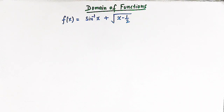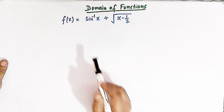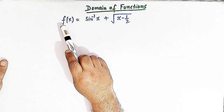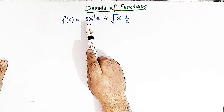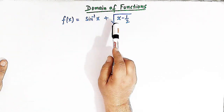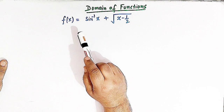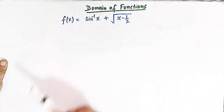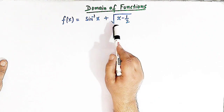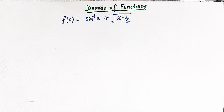Hello viewers. In today's session we are going to discuss another important and conceptual problem from the domain of functions. So here we have to find the domain of this function f of x, which is the sum of an inverse trigonometric function and a square root function. So f of x is equal to sin inverse x plus square root of x minus 1 over 2.